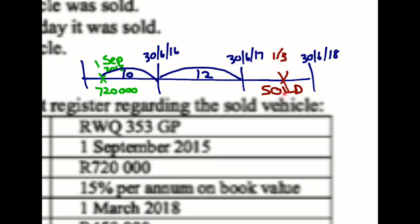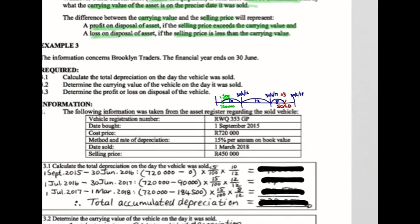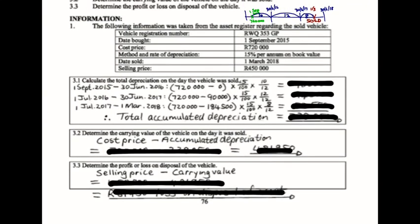They make an exception and say you are allowed to depreciate it for the last bit of time you've used it — in other words, from the 1st of July 2017 up to the 1st of March. That gives you July, August, September, October, November, December, January, and February. Because I sold it on the 1st of March, I don't count March. Therefore, I've used it for a further 8 months into the new year. When depreciation is determined, I need to pay close attention to my dates.